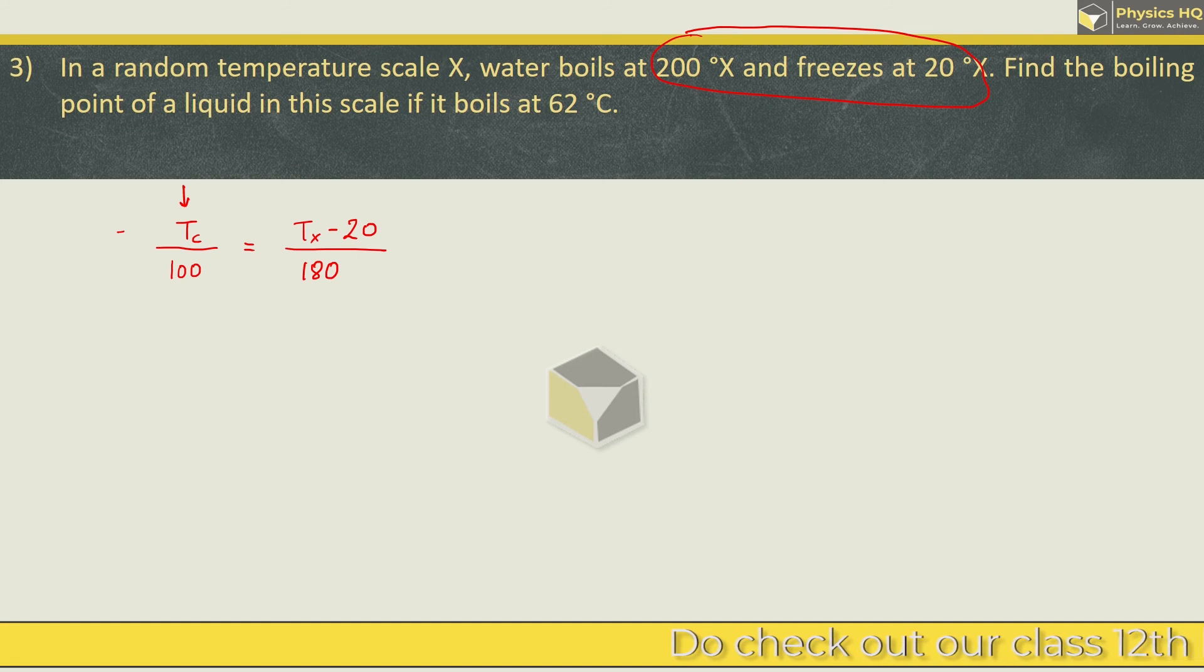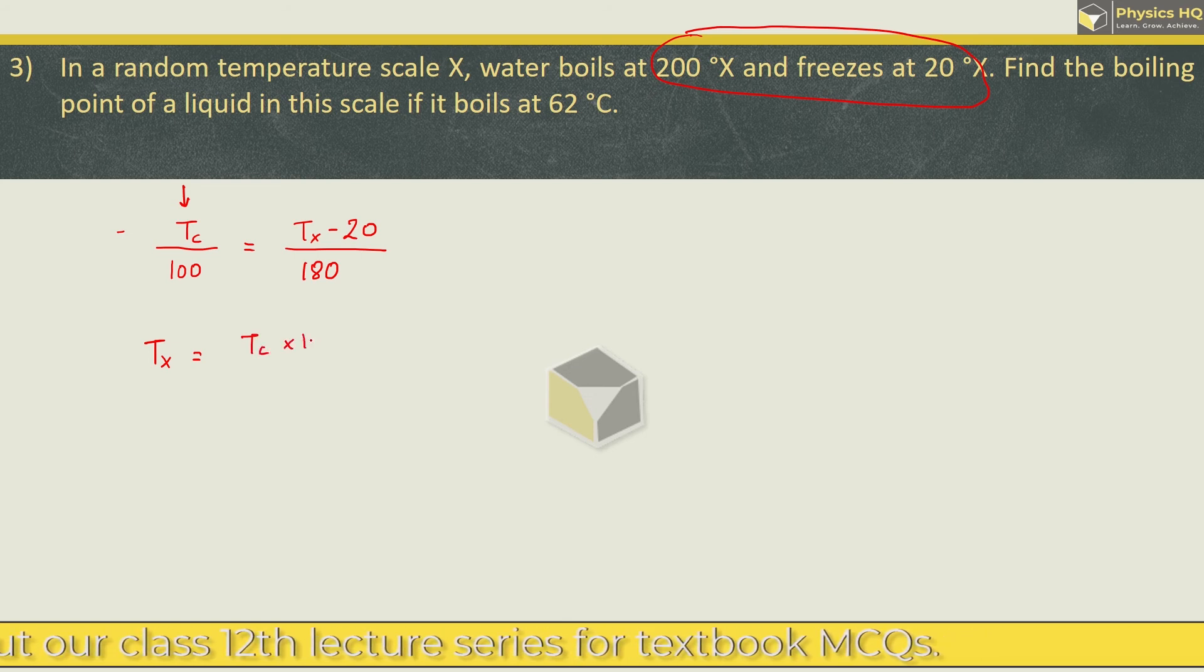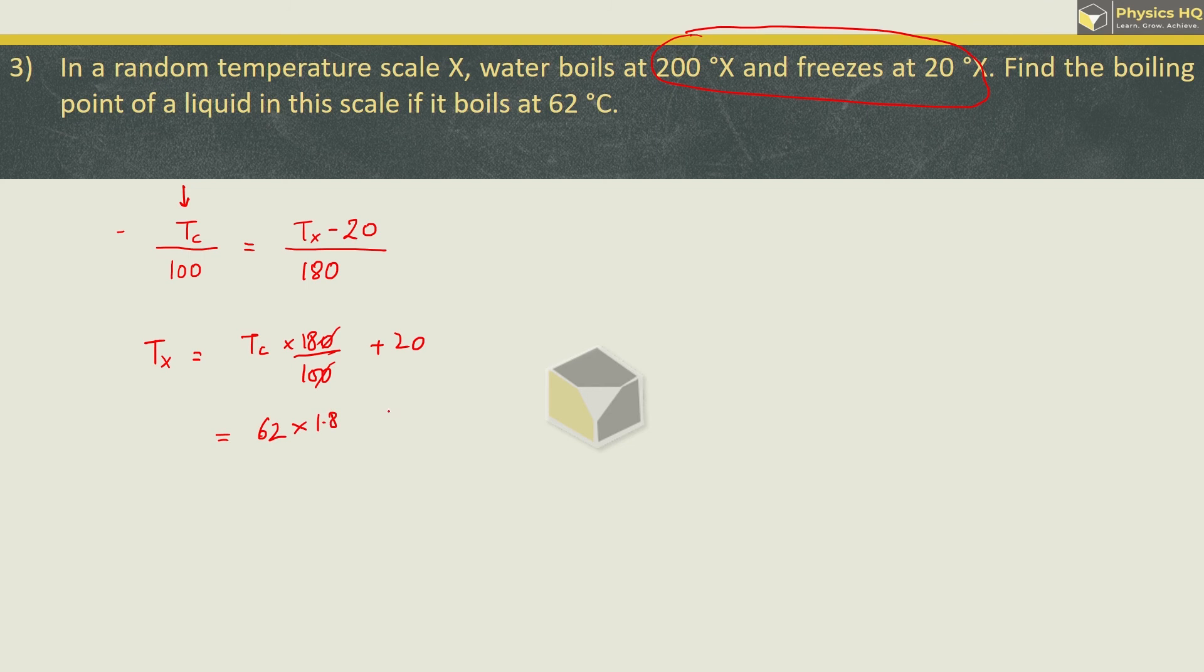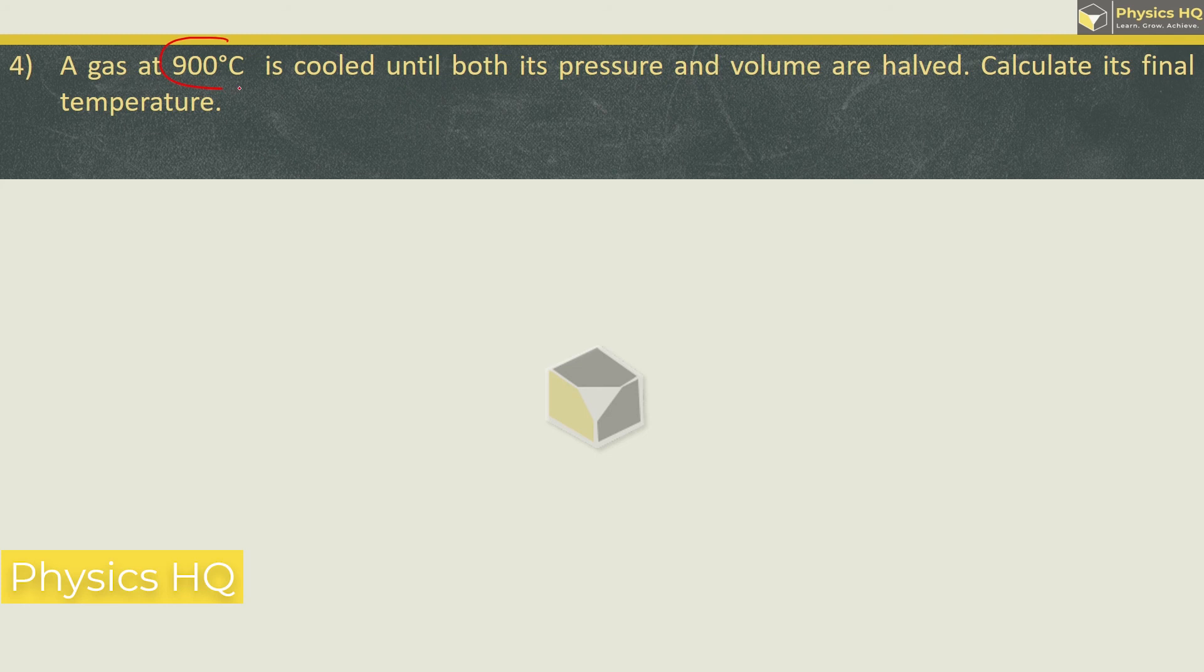So by this you can verify your equation is right. Now what we can do is put the value of temperature in Celsius as 62 and solve. So TX is equal to TC into 180 by 100 plus 20. Now TC is 62 into 1.8 plus 20. Now when you multiply this, this will be 111.6 plus 20 which will give you the answer as 131.6 degrees X. Hope you all understood this.